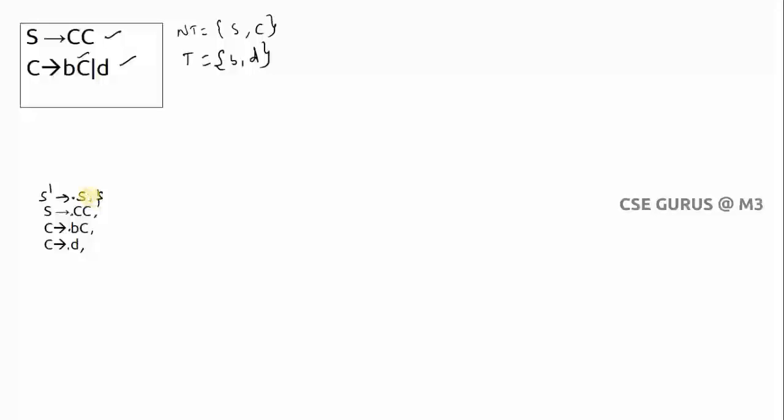For S: check if there is any dot-S production — yes, S' → •S. Now check what symbol comes after •S — there is no symbol. So the lookahead for S → CC is the same as the lookahead of the production containing •S, which is dollar. Wherever you find a non-terminal, check the right-hand side for dot of that non-terminal, then check what comes after that dot.